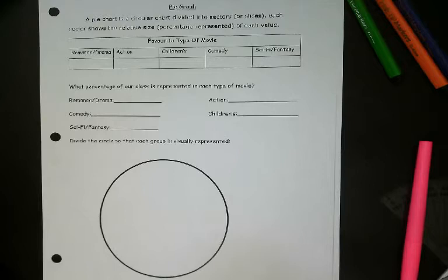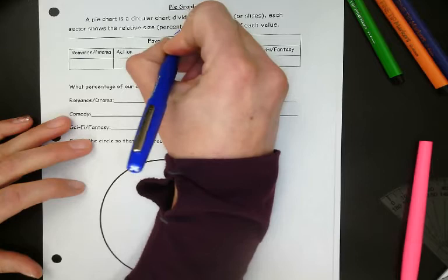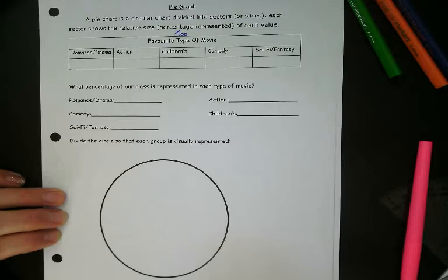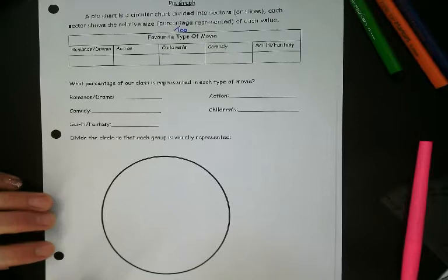So a pie graph is a pie chart, usually a circular chart divided into sectors or slices. Each sector shows the relative size percentage represented of each value. So percentage, remember we did percent last time, and that means out of 100. So all of the values or all the data you collect, you have to turn that into a percent. So you can use a calculator for that. You're allowed to use calculators this unit if you need.